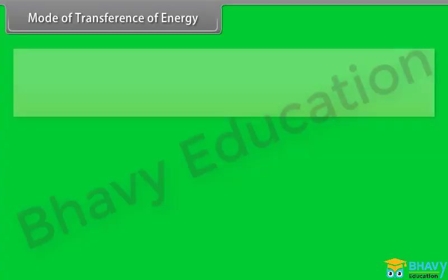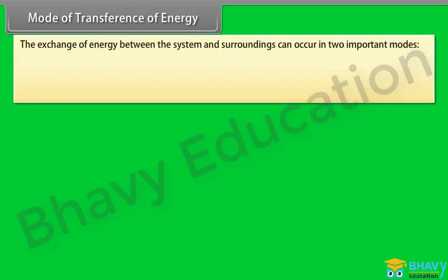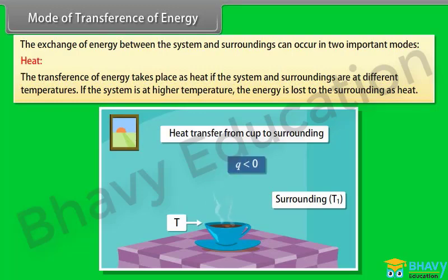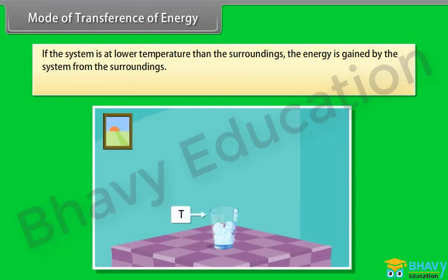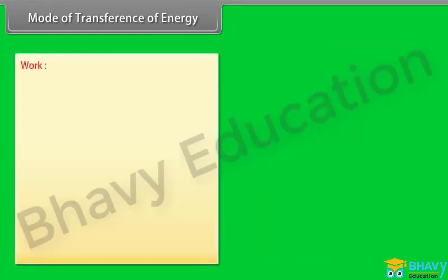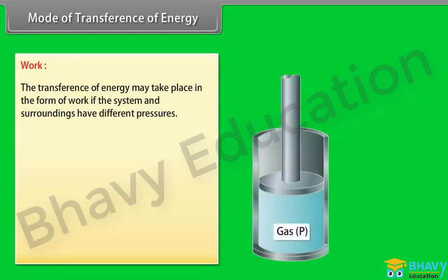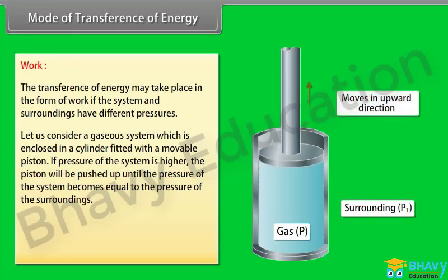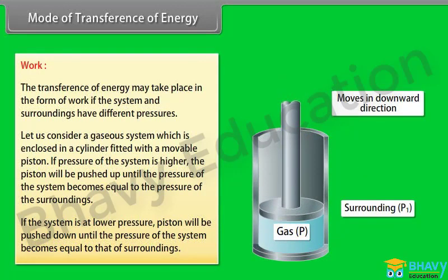Mode of transference of energy: the exchange of energy between the system and surroundings can occur in two important modes. Heat: the transference of energy takes place as heat if the system and surroundings are at different temperatures. If the system is at higher temperature, the energy is lost to the surroundings as heat. If the system is at lower temperature than the surroundings, the energy is gained by the system from the surroundings. Heat is represented by Q. Work: the transference of energy may take place in the form of work if the system and surroundings have different pressures. Consider a gaseous system enclosed in a cylinder fitted with a movable piston. If the pressure of the system is higher, the piston will be pushed up until the pressure of the system becomes equal to the pressure of the surroundings. If the system is at lower pressure, the piston will be pushed down until the pressure of the system becomes equal to that of the surroundings.